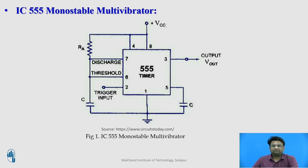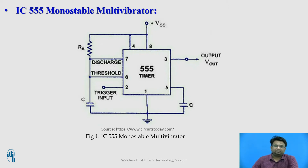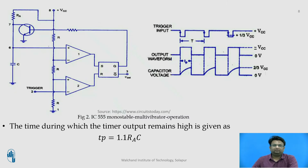Pin number 6, which is the threshold, is connected to pin number 7. The resistor RA is connected between pin number 6 and pin number 8. At pin number 7, the discharge capacitor is connected, while pin number 8 is connected to the supply. Initially, when the output at pin number 3 is low — that is, the circuit is in stable state — the transistor is on and the capacitor C is shorted to ground.